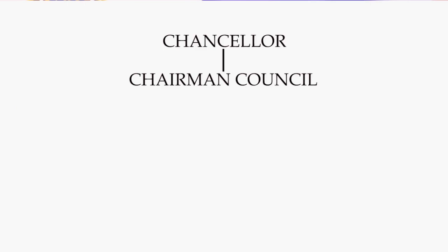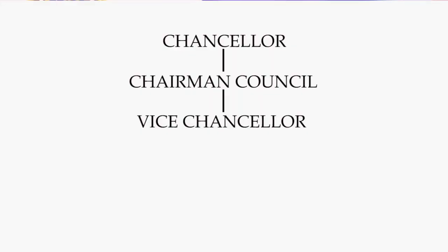Below the Chancellor, we have the Chairman of Council, who is more responsible in terms of management and also giving direction to the university in terms of governance. Below the Chair of Council, we have the Vice Chancellor, who is the chief executive of the university and is responsible for running the university in terms of its operations.